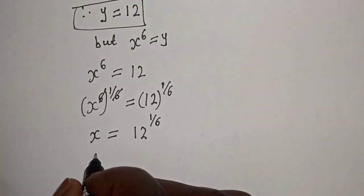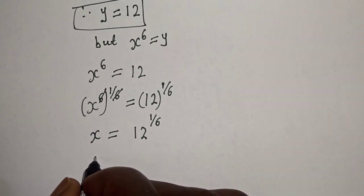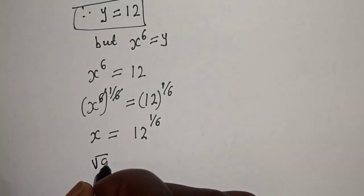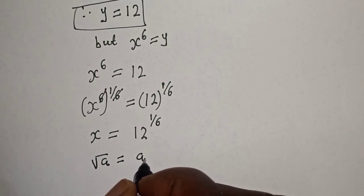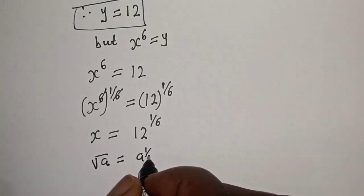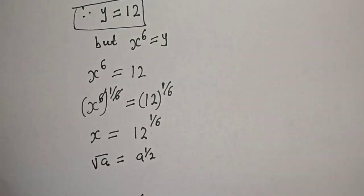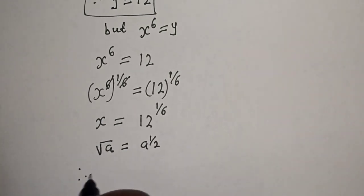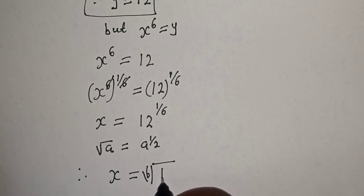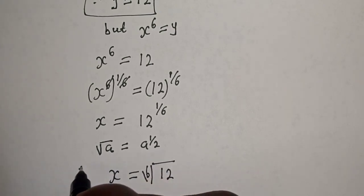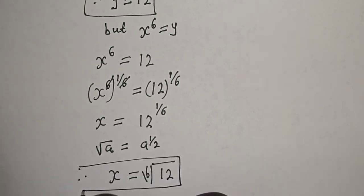Take note that the square root of a is equal to a raised to power 1 over 2. Therefore, s is equal to the 6th root of 12. This is the final answer.